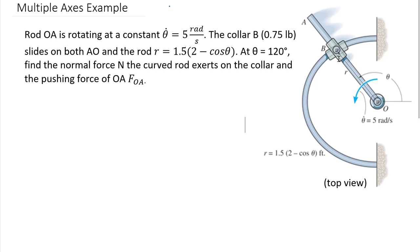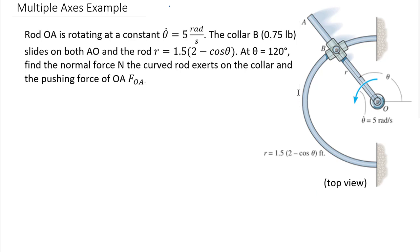This collar has a weight of 0.75 pounds — that's the combined weight of both collars. There's a pin in the middle because those need to change angle as one part of the collar tracks arm OA and the other part slides around the curved radius. The instant we're looking at is theta equals 120 degrees. We want to solve for a normal force from the curved rod and a pushing force perpendicular to arm OA. This is the top view, so the weight force goes perpendicular to all the motion and we can ignore it.